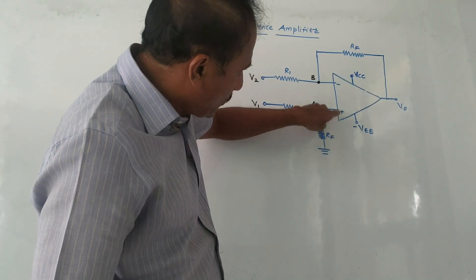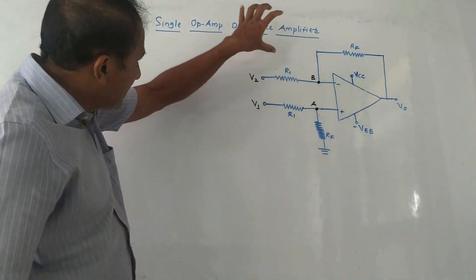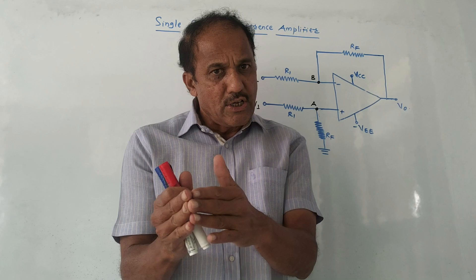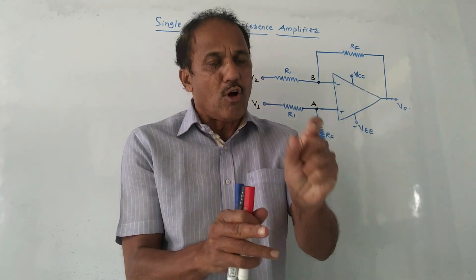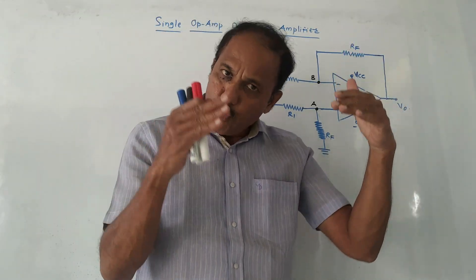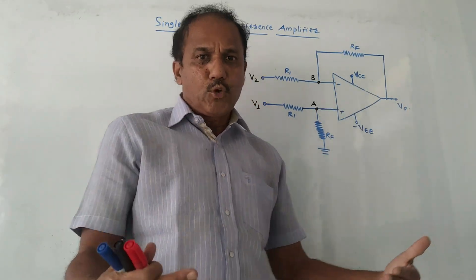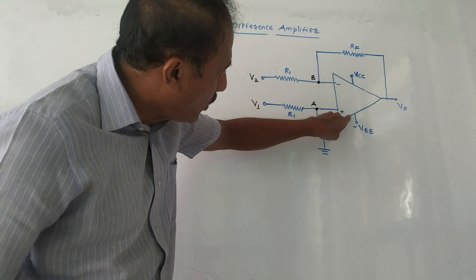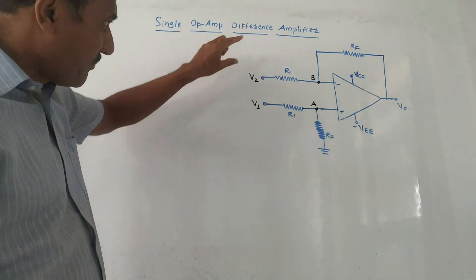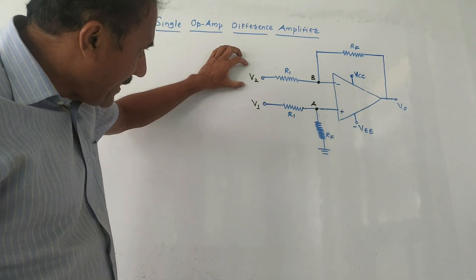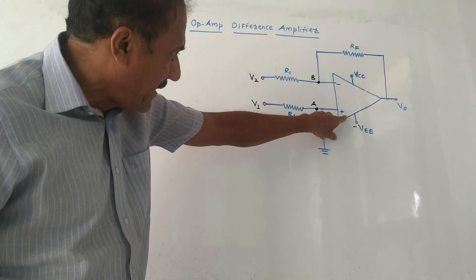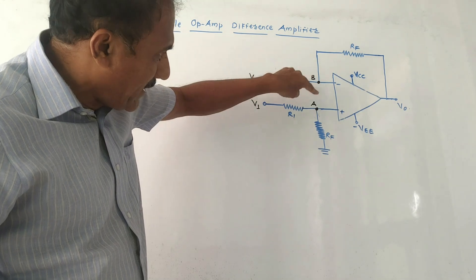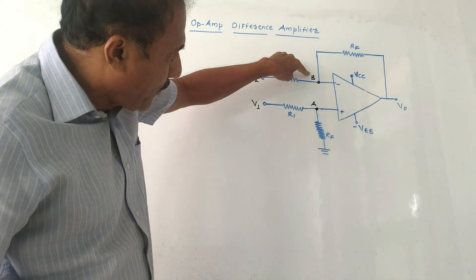This is the diagram of the difference amplifier. As the name indicates, it gives an output voltage which is proportional to the difference of the input voltages. Since we calculate the difference of input voltages, we have to apply input voltage to both the negative as well as the positive terminal — this is the major difference. This is the negative terminal where we have applied voltage V1. This point is A and this point is B; naturally the voltage at point A is Va and at point B is Vb.